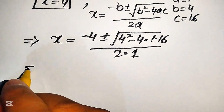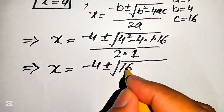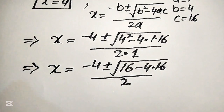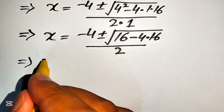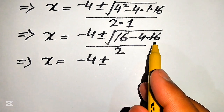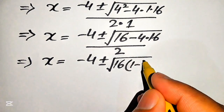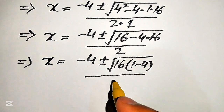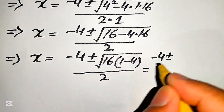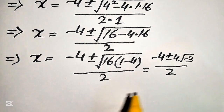Further simplifying: x equals minus 4 plus minus square root of 16 minus 4 times 16, divided by 2. Taking 16 as a common factor inside the square root gives 16 times 1 minus 4. Expanding the square root: square root of 16 equals 4, and 1 minus 4 gives square root of minus 3, all divided by 2.